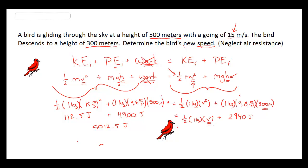Bear in mind, as the next calculation does come up, I am going to subtract out 2,940 from the right side, the final energy, and subtract it from my 5,012.5 joules as well. So let me do a little bit of math here.